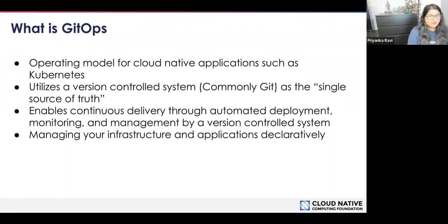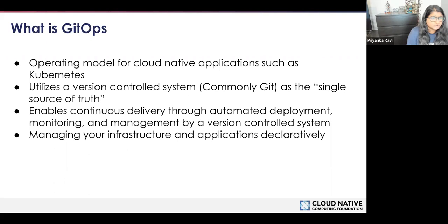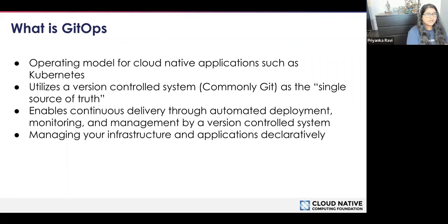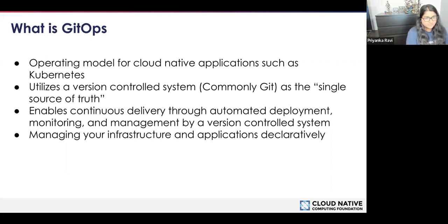So what is GitOps? GitOps is an operating model for cloud-native applications such as Kubernetes, though I want to highlight that it's not just for Kubernetes. It utilizes a version-controlled system — most commonly Git, but you can utilize other sources of truth. So you have something like an audit trail: all changes are recorded and you can go back and view this source of truth. It enables continuous delivery through automated deployment, monitoring, and management. Most likely you're already using tools such as Git, so you can take advantage of tools you're already using. And that's the beauty of GitOps — it also manages your infrastructure and applications declaratively.